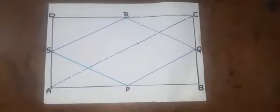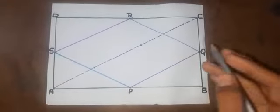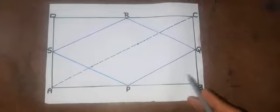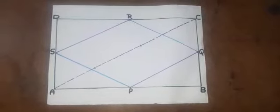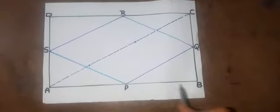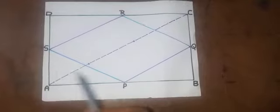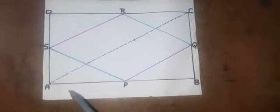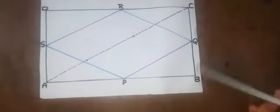Now let's take two other triangles, triangle SAP and triangle QBP. Angle A is equal to angle B because both are 90 degrees. AP is equal to PB because P is the midpoint of AB and it divides AB into two equal halves. Now due to the property of rectangle we know that AD is equal to BC.